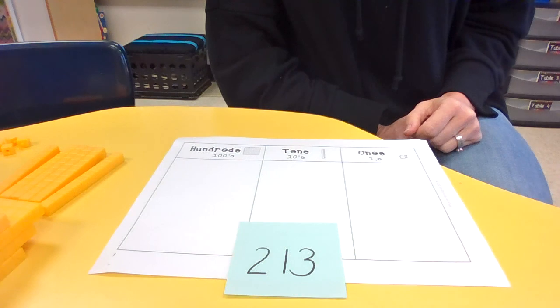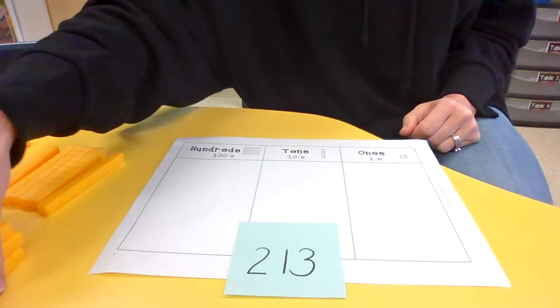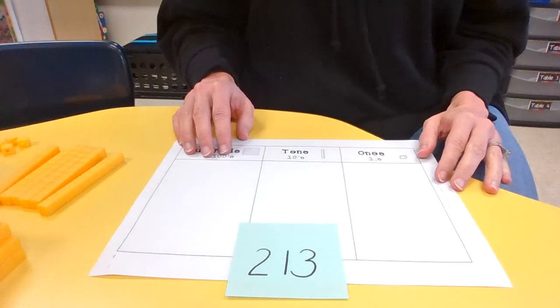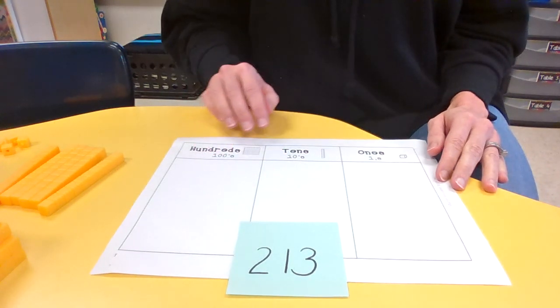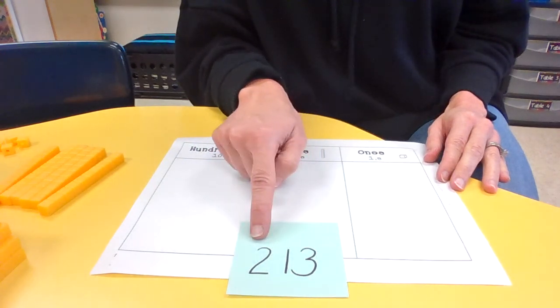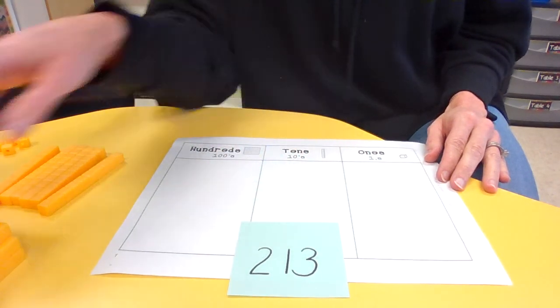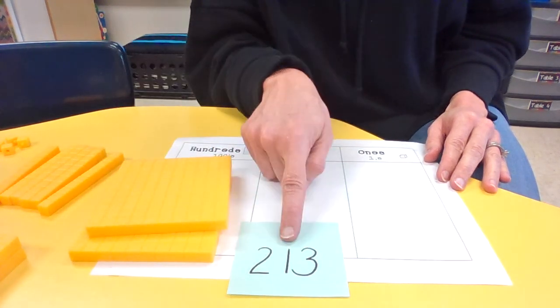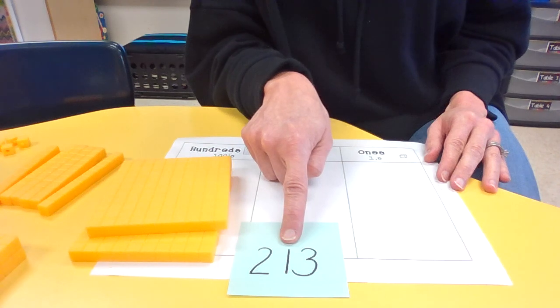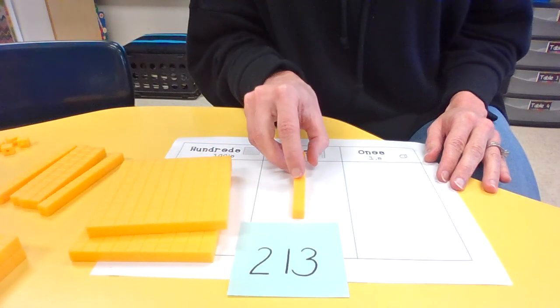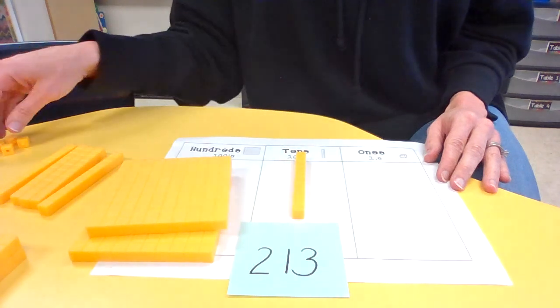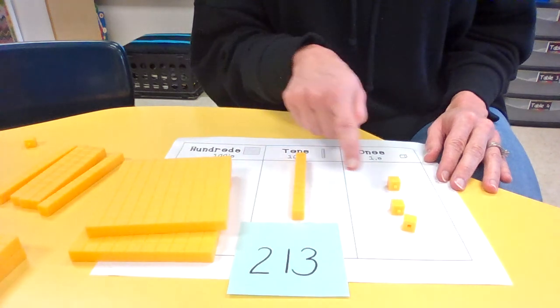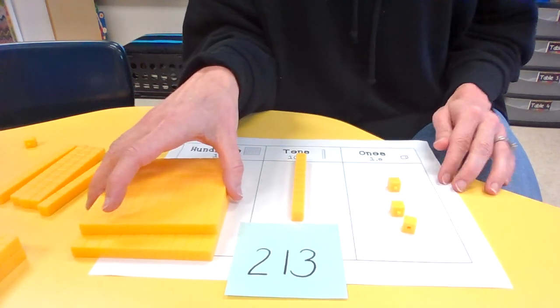I bet you're starting to get really fast at this. The more you practice, the better you're going to get. That's true with anything. Okay, let's see, three digits. That means we're going to start there in the hundreds place. We have a 2. 1, 2, 200. How many in the tens place? 1. And 3 in the ones place. 1, 2, 3. 213. All right, friends.